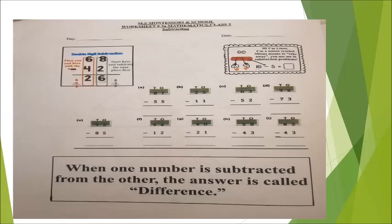This is worksheet 3A. This worksheet is very simple. You are going to do double digit subtraction. All the sums in this worksheet are without converting tens. You only need to apply the operation of subtraction. When one sum is subtracted from the other, the answer is called the difference. First, you have to solve the column of ones and then the column of tens. You are going to solve all these sums on your own.